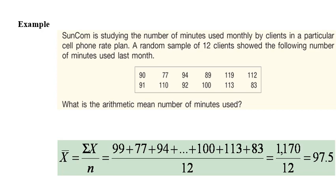Here we have an example of this. Suncom, this is the name of the company, is studying the number of minutes used monthly by clients in a particular cell phone rate plan. A random sample of 12 clients showed the following number of minutes used last month. As we can see, x bar or the mean in this case is the sum of all of them divided by the number of observations, and it is 97.5, which means that the average minutes used in this sample is 97.5 per month.